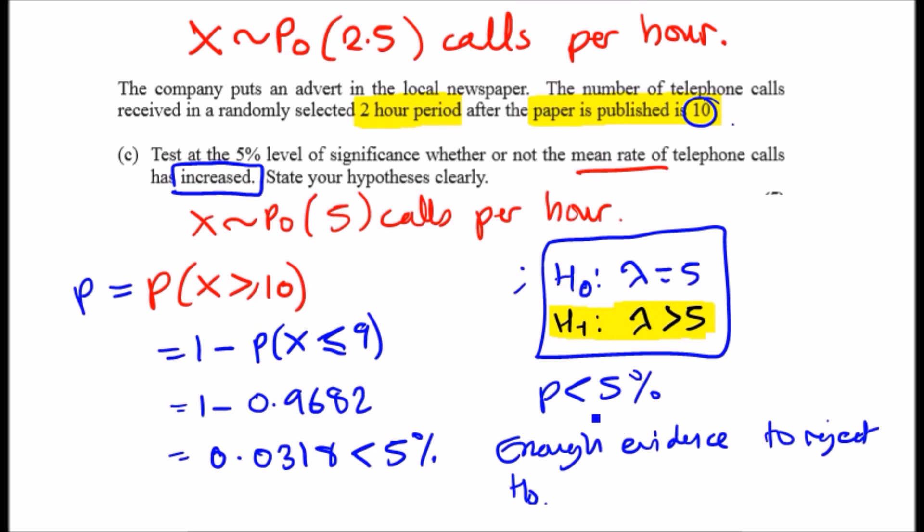So if we can reject H0, this implies that we have to accept that this statement is correct, that there is enough evidence to suggest that the mean rate of telephone calls has increased to 10, or at least has increased. That's it. So make sure you say this statement plus that there is enough evidence that the mean rate of telephone calls has increased. Saying all this will get two marks. If you only say this you get one, so please make sure you say both if you want the full marks. Anyway guys, hope this helps and I'll see you next time, ciao.